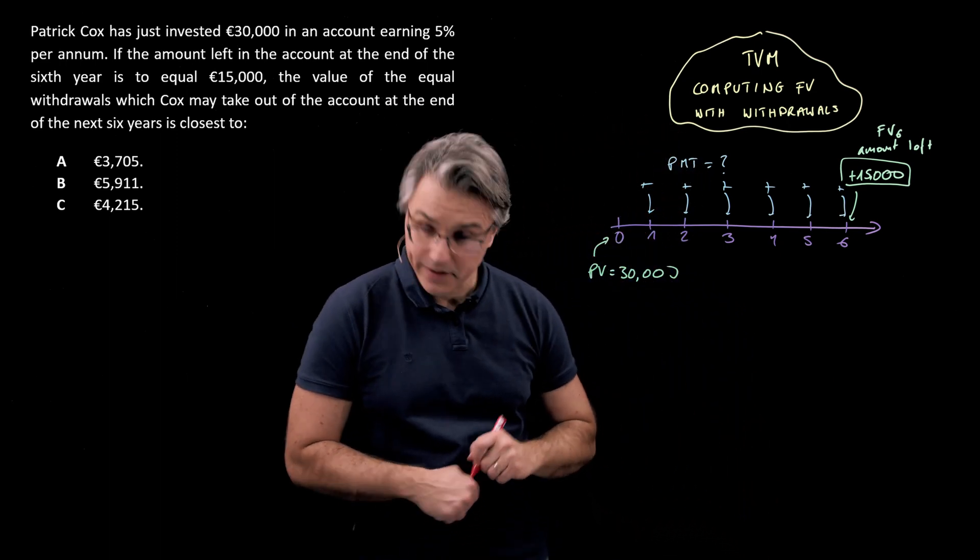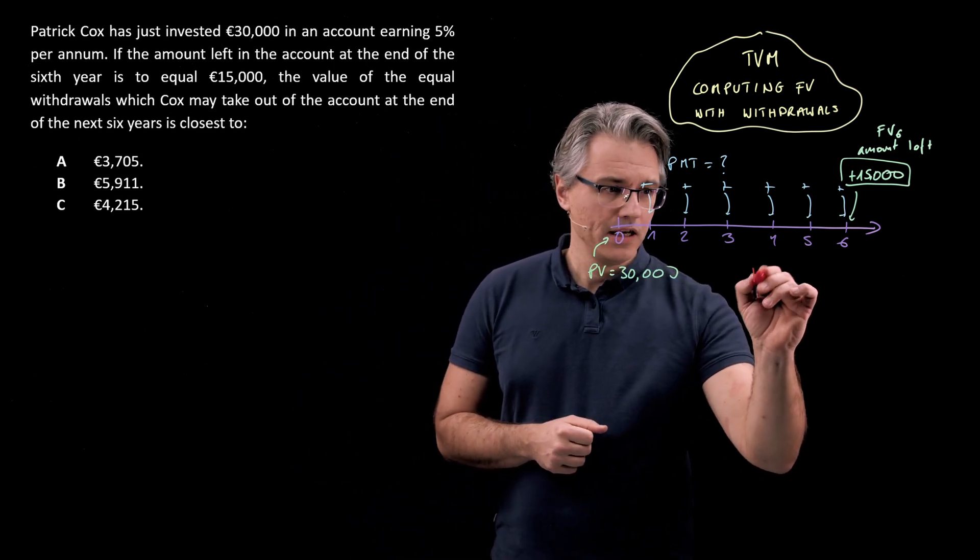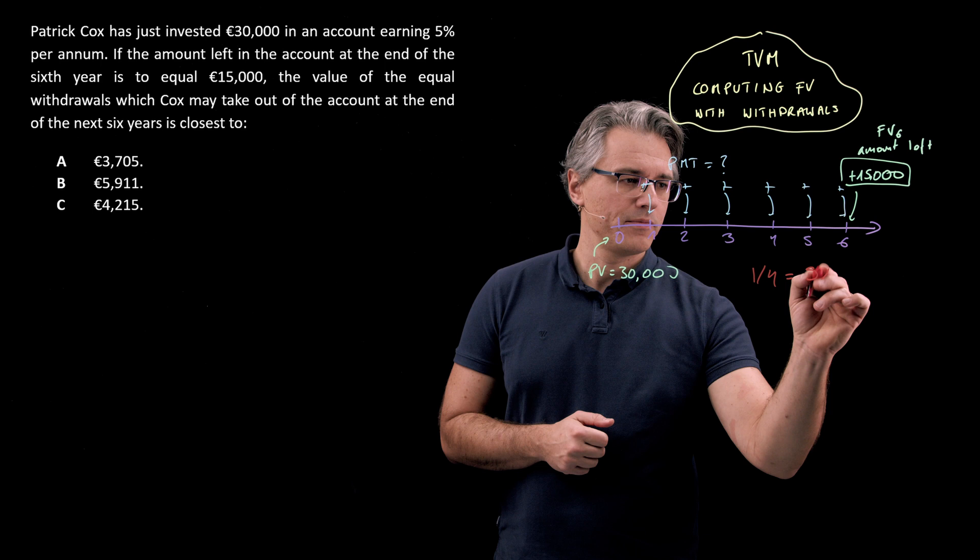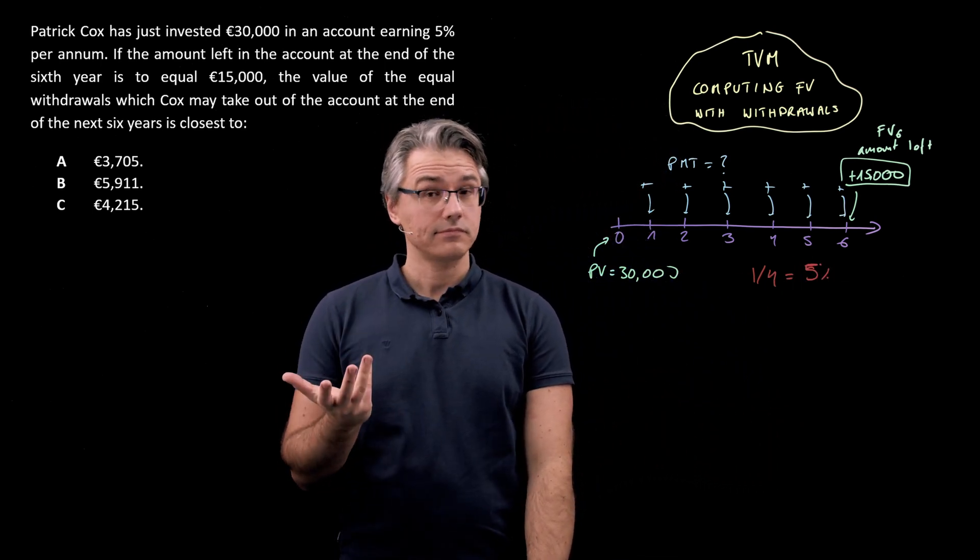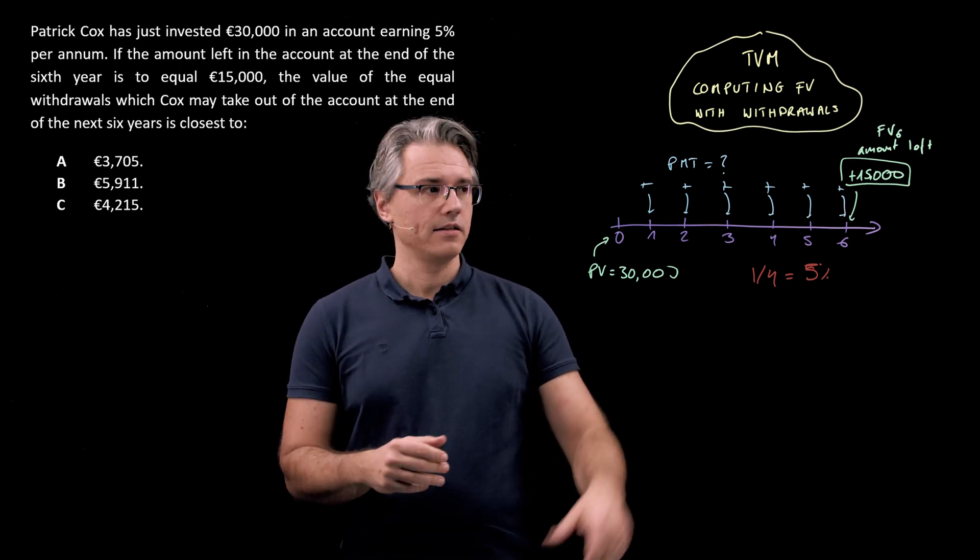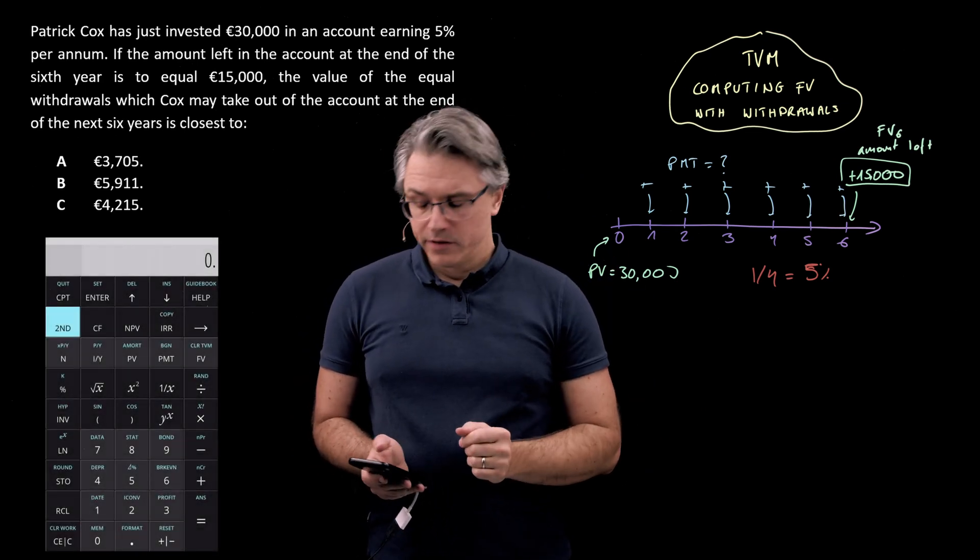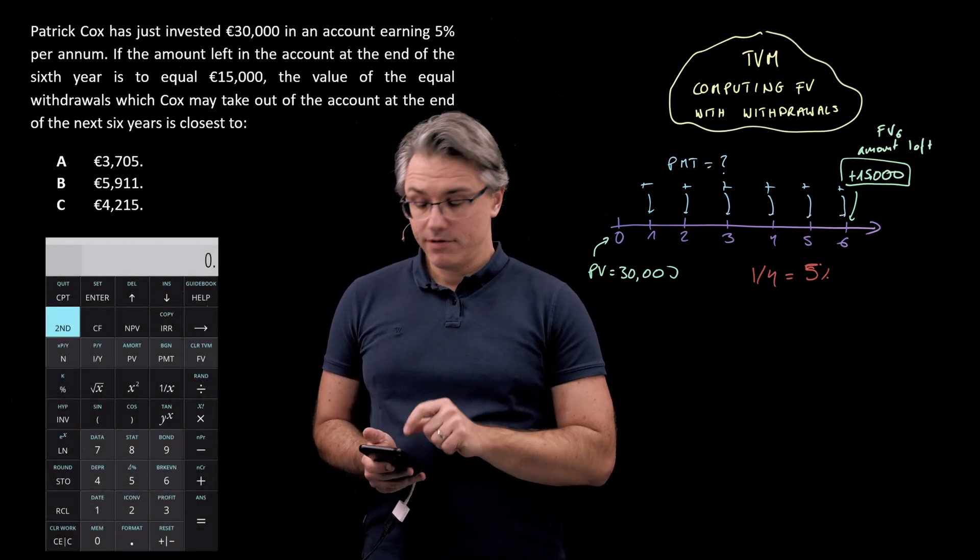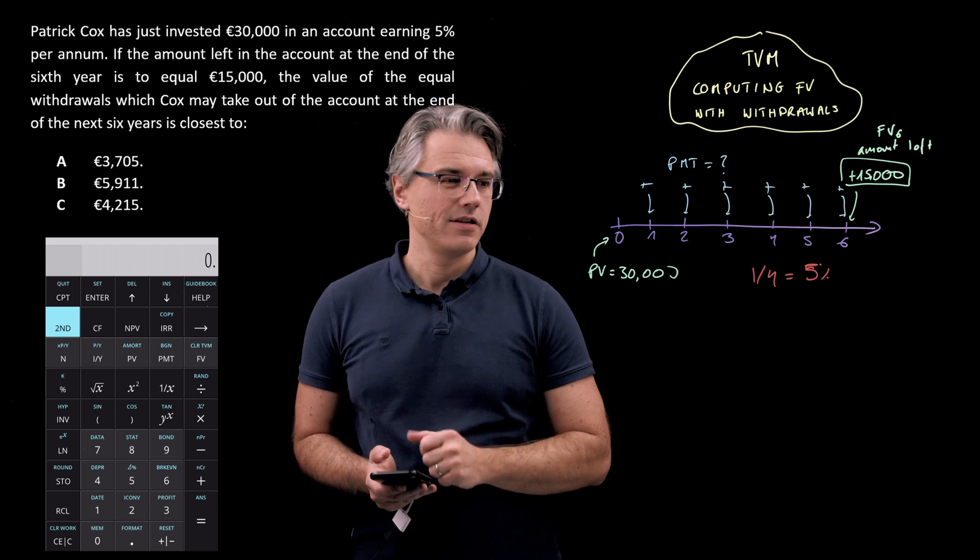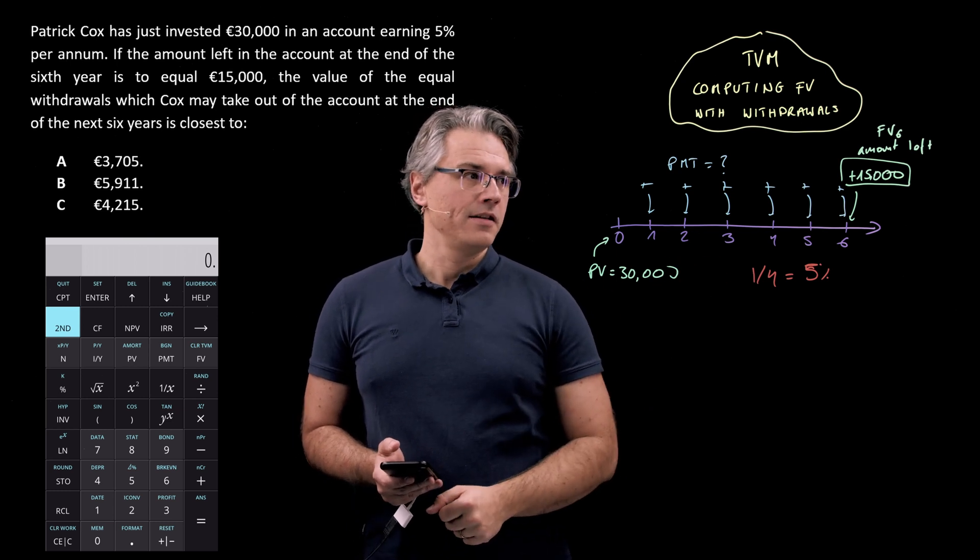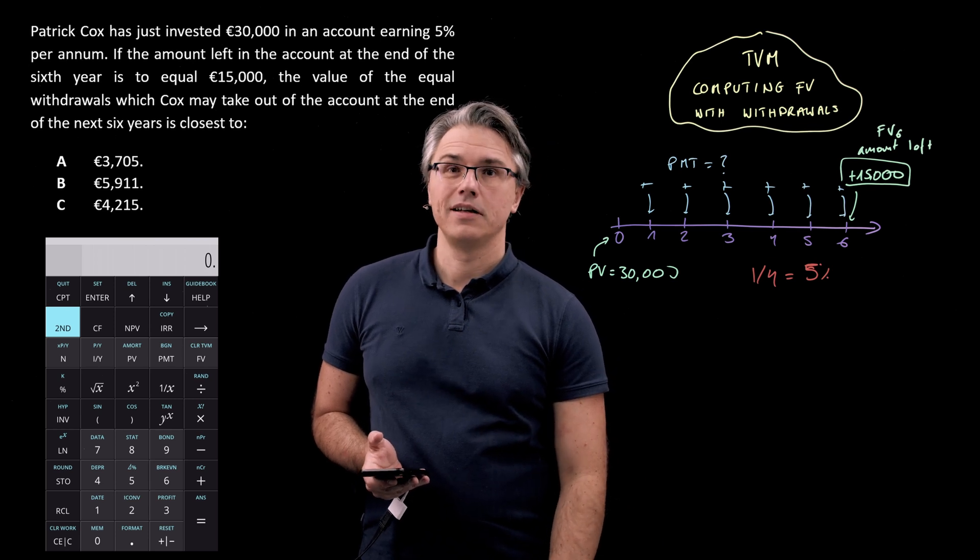One more input which we need is the interest rate or the rate of return for the account. That's going to be our I/Y, which is 5%, so simply 5 as the input on the calculator. Let's go to the TVM worksheet on the calculator to get this computed. Because we're going to work with the time value of money worksheet, I suggest we clear it first. So second FV, which has clear time value of money as its secondary function, and now in any order we can input these numbers.